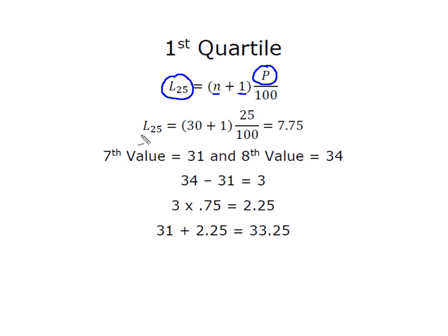So it looks like the location of the first quartile is going to be at 7.75, so that means that we want the seventh observation and then we want 0.75 of the distance between the seventh and the eighth value. So I find my whole part first and that seventh value is 31 and then the next value in the data set is 34, so I want to move 0.75 of the distance between the two.